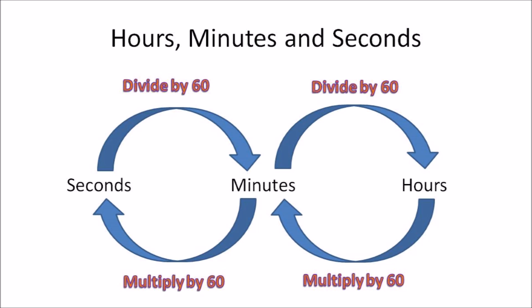And that is how you convert between seconds, minutes, and hours. If you have to convert from seconds to minutes, you divide by 60, and then from minutes to hours, it's again divide by 60. If you have to convert hours to minutes, you multiply by 60, and then minutes back to seconds, you multiply by 60.